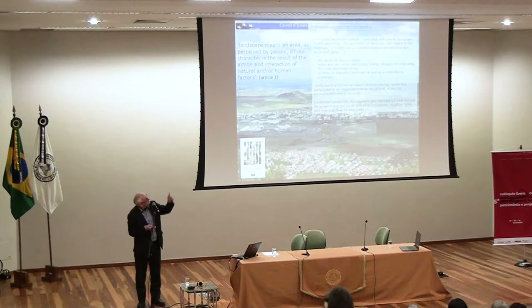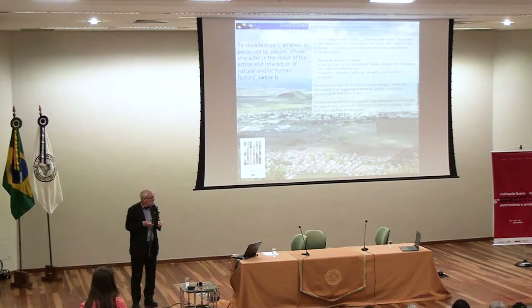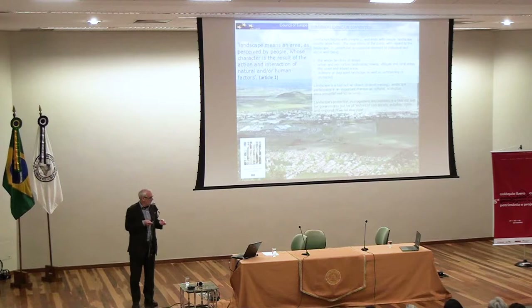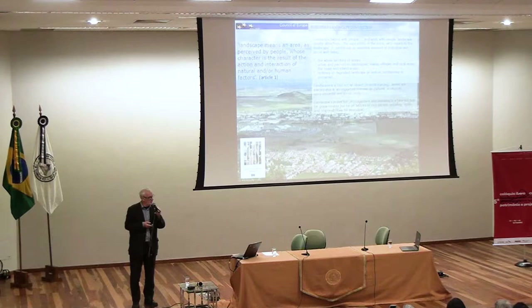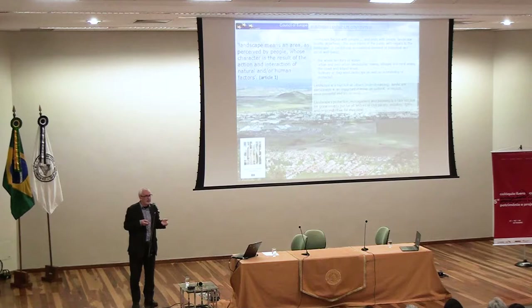The landscape convention definition on the top left corner is almost too simple, but you can read into it almost anything that you need: 'an area perceived by people, whose character is the result of the action and interaction of natural and/or human factors.' Within that, many disciplines have been able to adapt and use it. The definition of scope covers special and ordinary landscapes, but also urban areas, peri-urban areas, industrial areas, lakes, seascapes. Landscape is a way of seeing the world, whatever sort of world it is.